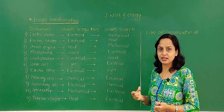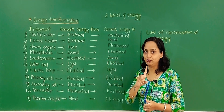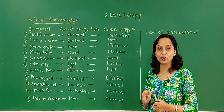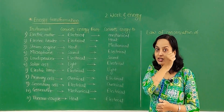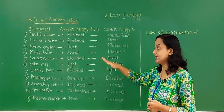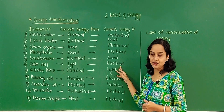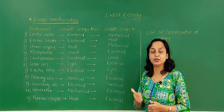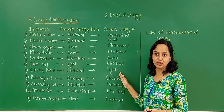The next is solar cell, also called solar photovoltaic cells. Solar cells convert light energy — that is sunlight — into electrical energy. The next is electric lamp. We use normal bulbs and tubes, where electricity is converted — electrical energy is converted into light energy.